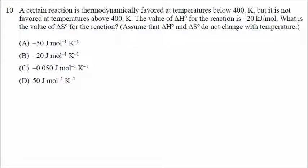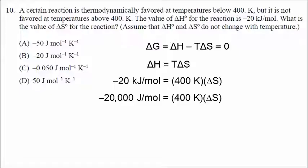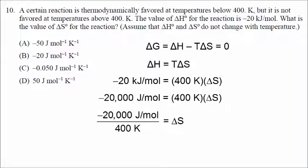Number 10: below 400 Kelvin the reaction is favored, but not above 400 Kelvin. So 400 Kelvin is the point where delta G switches from negative to positive — at 400 Kelvin, delta G must equal zero. Setting delta H equal to T delta S: delta H is negative 20 kilojoules per mole, temperature is 400 Kelvin. Converting to joules gives negative 20,000 joules per mole. Dividing both sides by 400 Kelvin gives delta S equal to negative 50 joules per mole Kelvin. Correct answer is A.